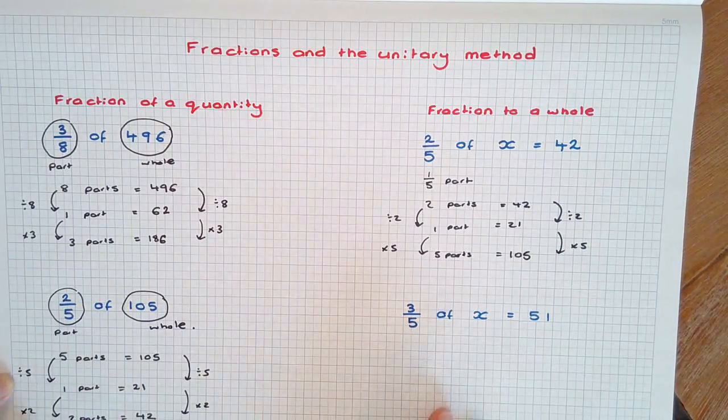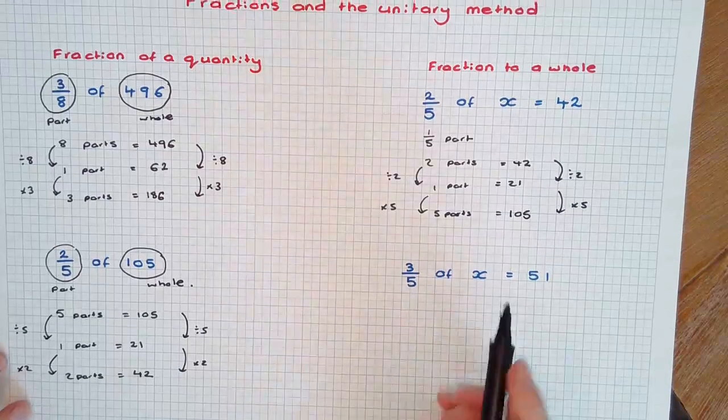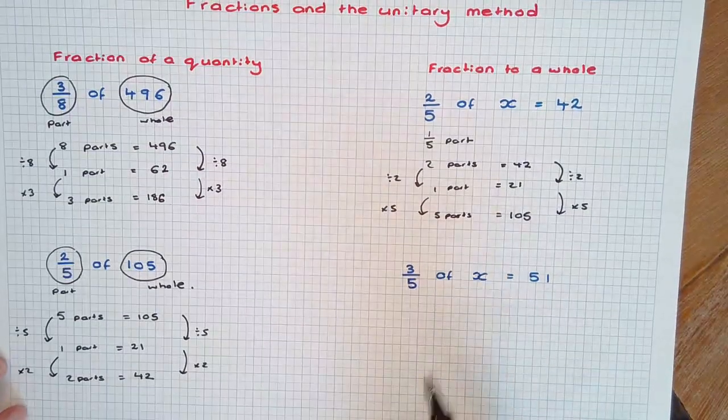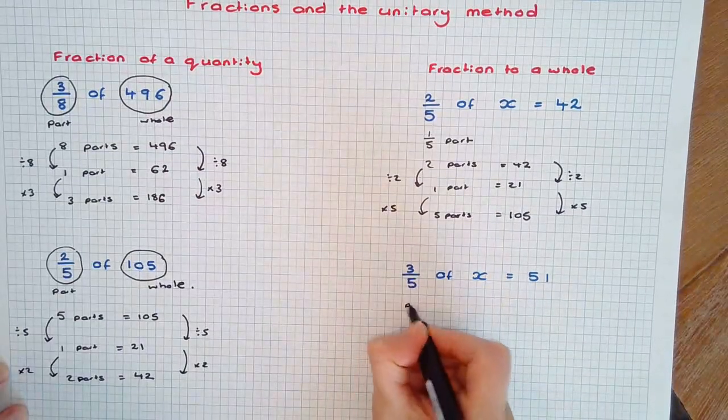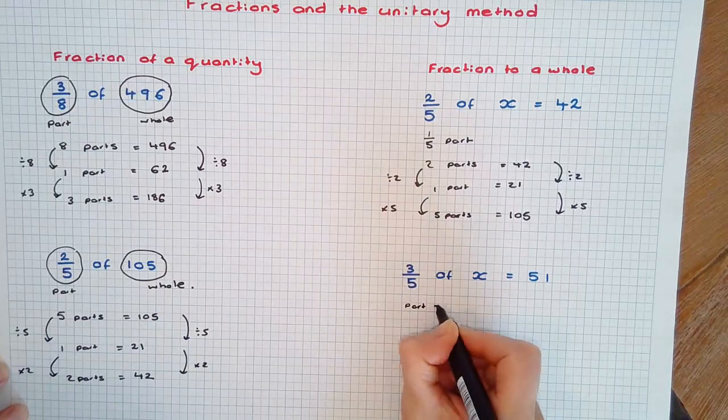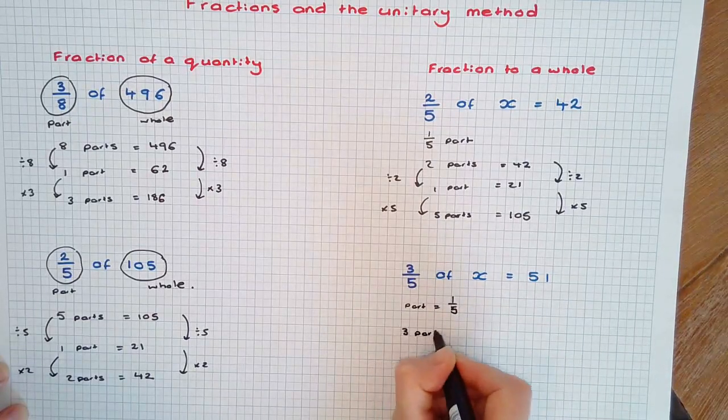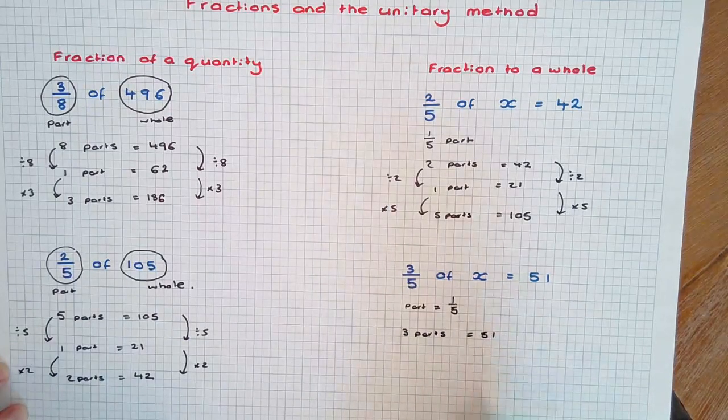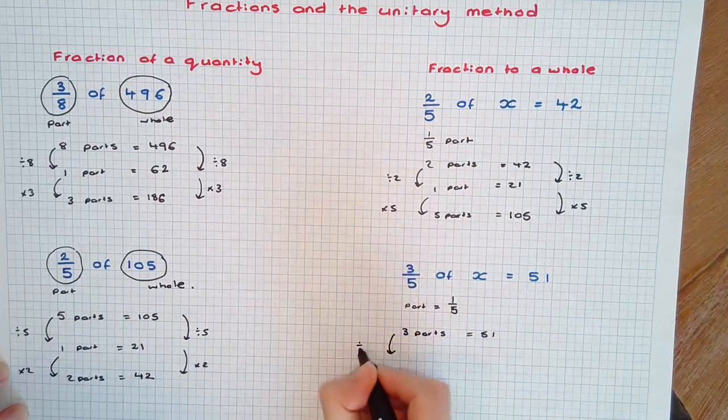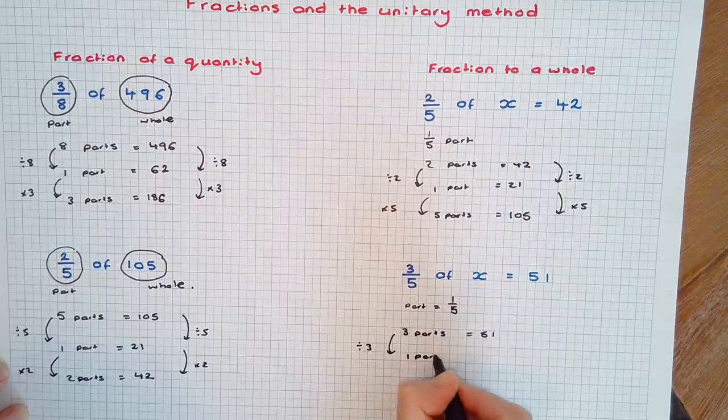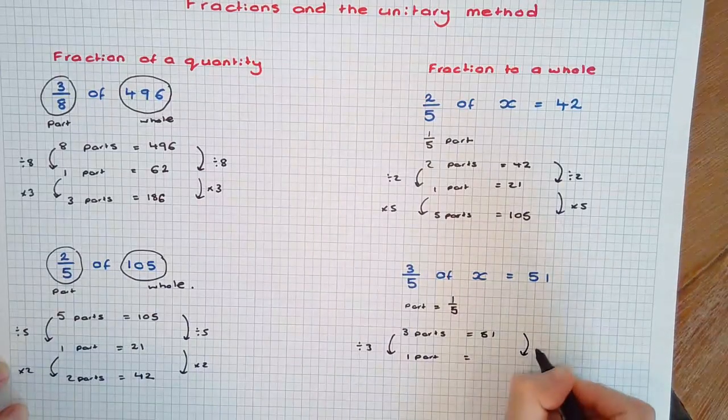Let's do that again with a new question. Suppose 3 fifths of a certain amount, a whole, is 51. The part here, again we're working in fifths. We know that 3 parts equals 51. Therefore, dividing by 3, we can find 1 part.